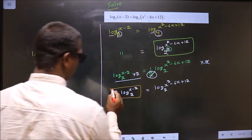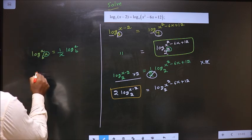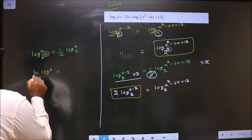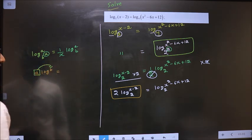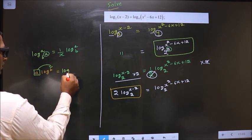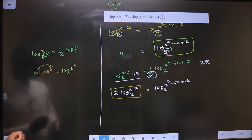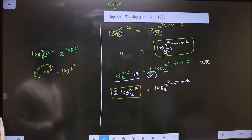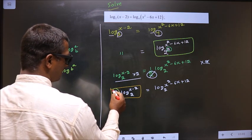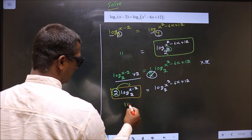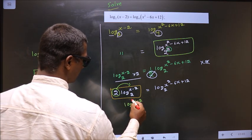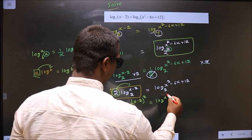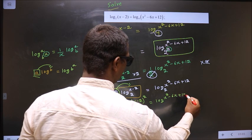Now I will apply the formula: a·log(b) equals log(b^a). A number in front of the log goes up as the power, making it log(b^a). Here the number is 2, so it goes as the power, making it log(x minus 2) whole squared base 2, equal to log(x squared minus 6x plus 12) base 2.